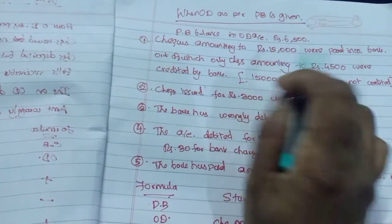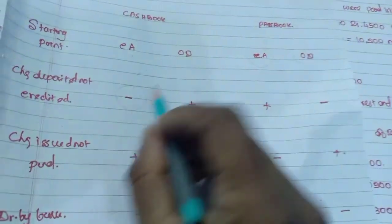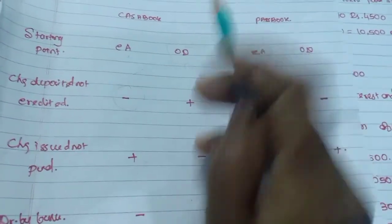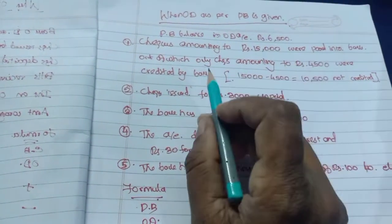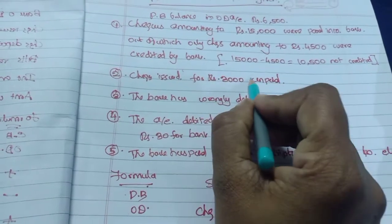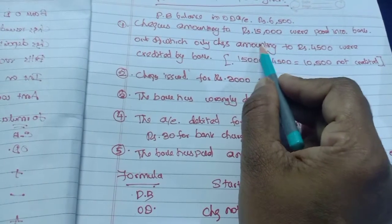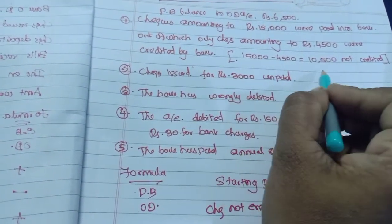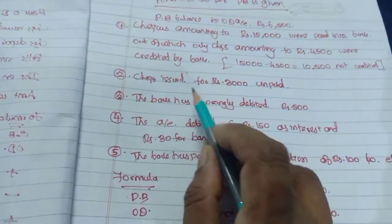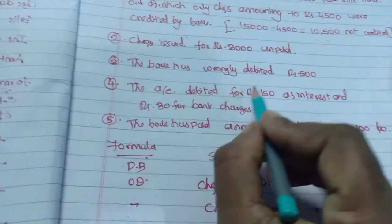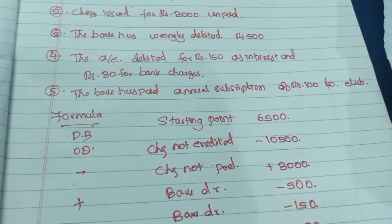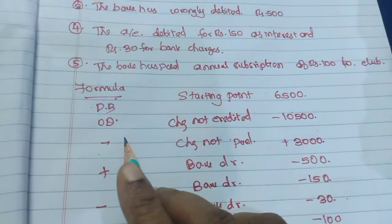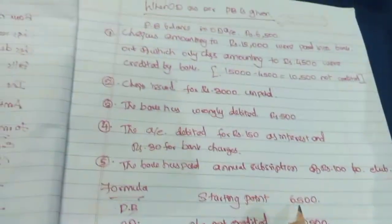The fourth problem is when OD as per passbook is given. Since passbook OD balance is given, we use the formula: minus, plus, minus, plus, to find the cashbook balance. Passbook OD balance is Rs. 6,500. Checks amounting to Rs. 15,000 were paid into the bank, but only Rs. 4,500 were credited — so Rs. 10,500 not yet credited. Check issued for Rs. 3,000 is unpaid. Bank wrongly debited Rs. 500. The account was debited Rs. 150 as interest and Rs. 30 for bank charges. The bank paid annual subscription of Rs. 100 to the club. Starting point is Rs. 6,500.